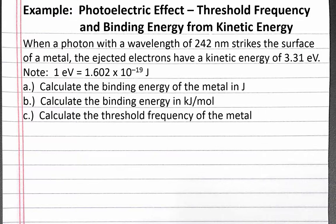In this example, we calculate the threshold frequency and binding energy from the kinetic energy of an ejected electron and the wavelength of electromagnetic radiation striking a metal. Our problem reads: when a photon with a wavelength of 242 nanometers strikes the surface of a metal, the ejected electrons have a kinetic energy of 3.31 electron volts. Note: 1 electron volt is 1.602 times 10 to the negative 19th joules.